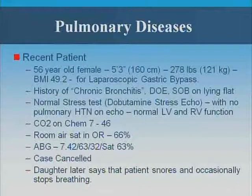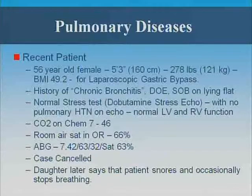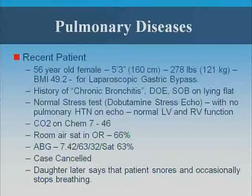In the OR, the resident called me: he couldn't get the SAT to work. We tried three monitors on her finger, nose, and ears — the SAT wouldn't go above 66–68%. We did a blood gas; the first was venous. I put an arterial line in, got the gas: pH 7.42, PO2 63 on room air with a SAT of 63%. We canceled the case. The daughter confirmed she snores and occasionally stops breathing. Eighteen months earlier, she had been canceled by another anesthesiologist for bariatric surgery but never went for follow-up. At that time her PCO2 was 56 and SAT was 81%. She had gotten worse and gained 30 pounds.